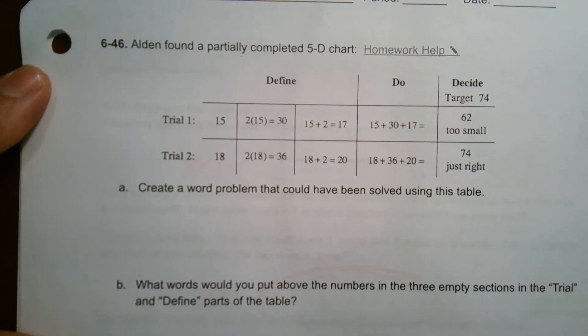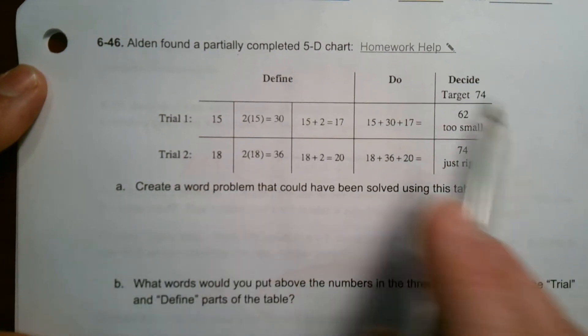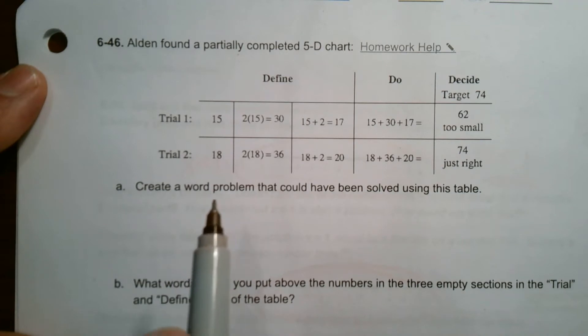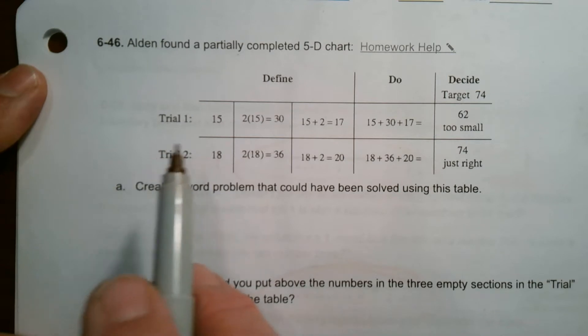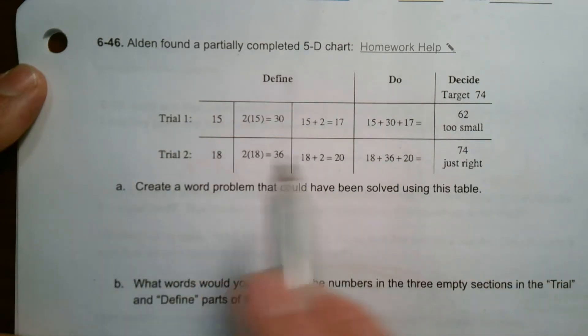Hey folks, Mr. Dell here. We are looking at a partially completed 5D chart. This is that guess and check table, the 5D process of solving word problems. And we're going to go backwards. Given some of the math, can we figure out what the word problem was?